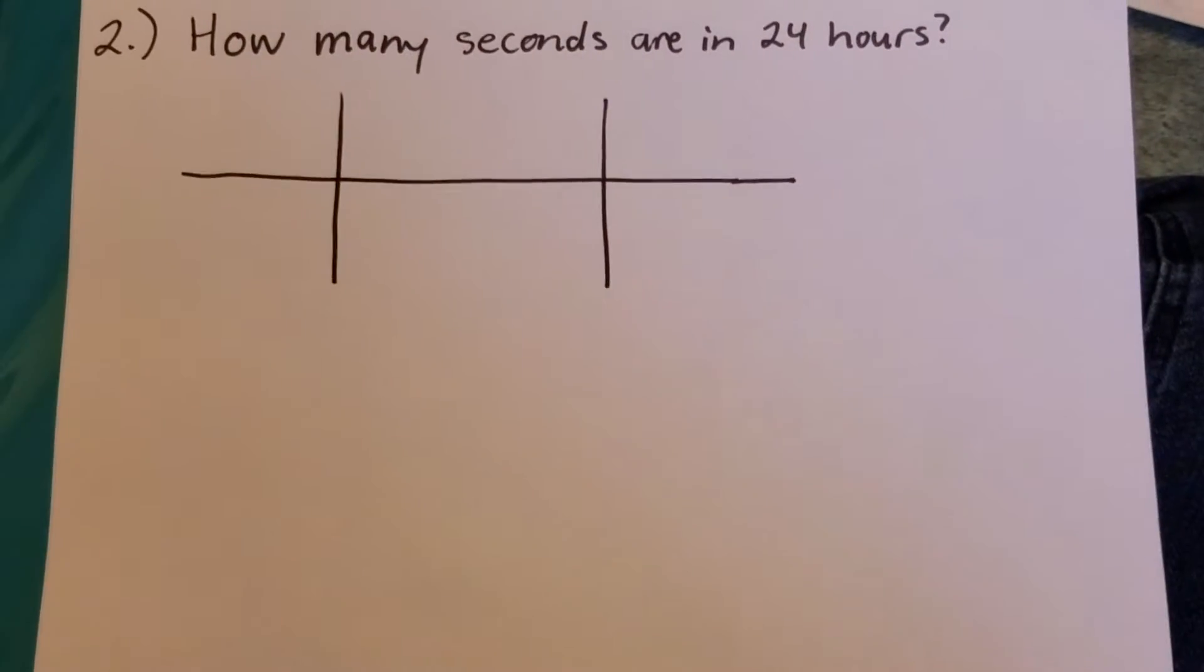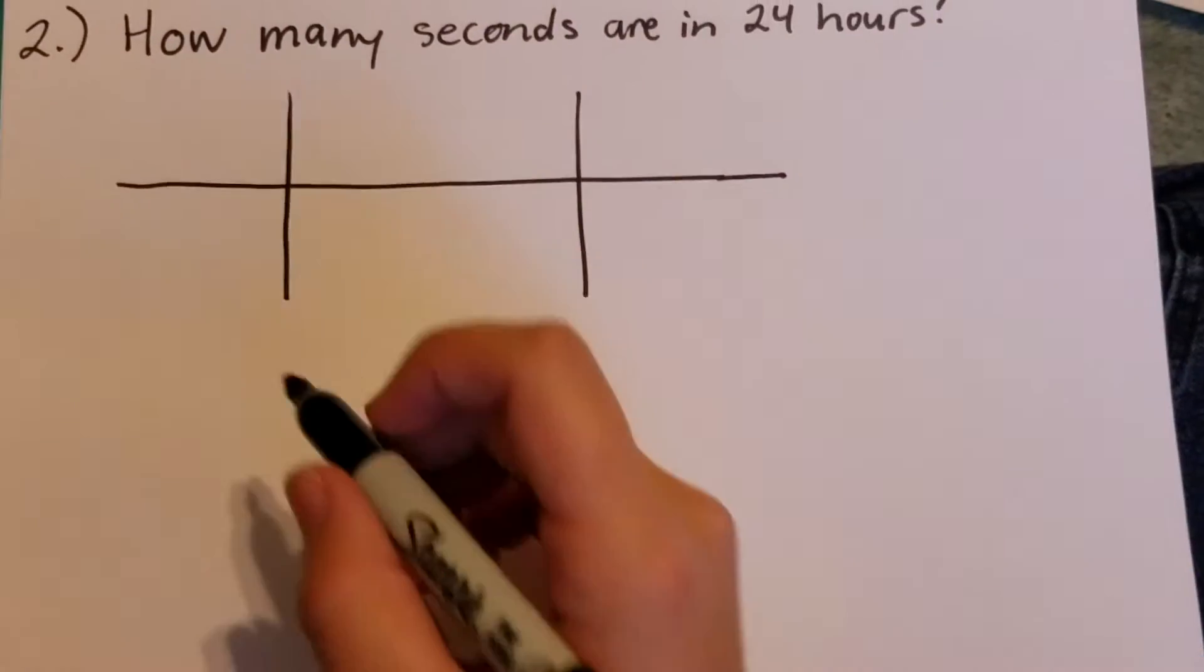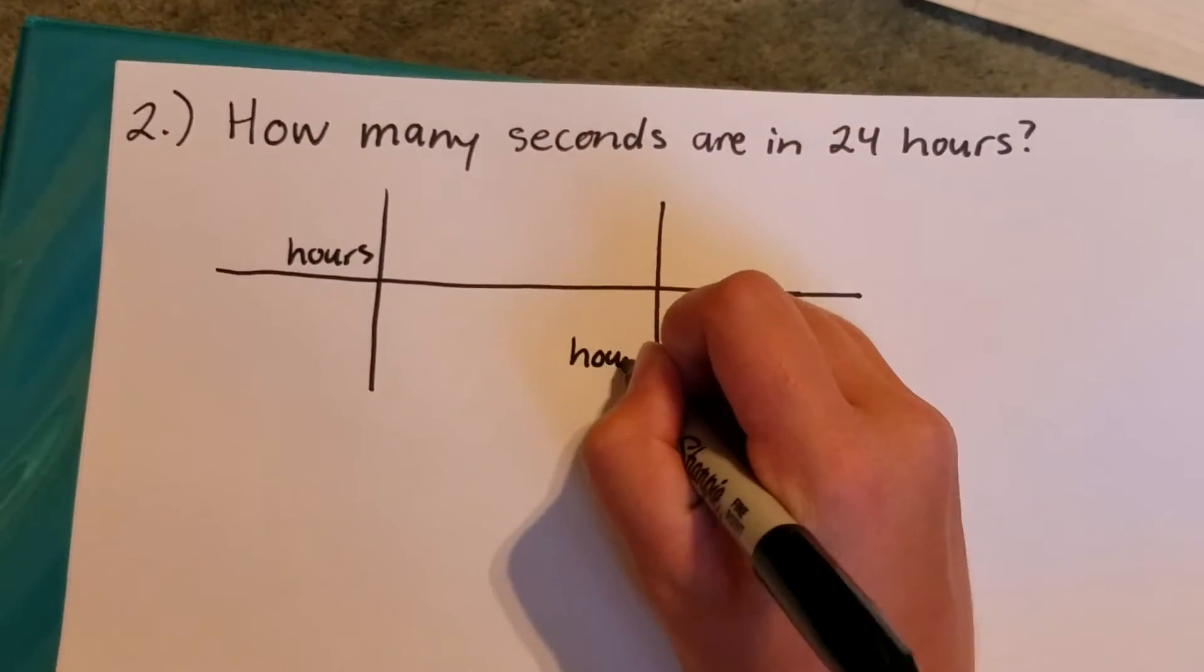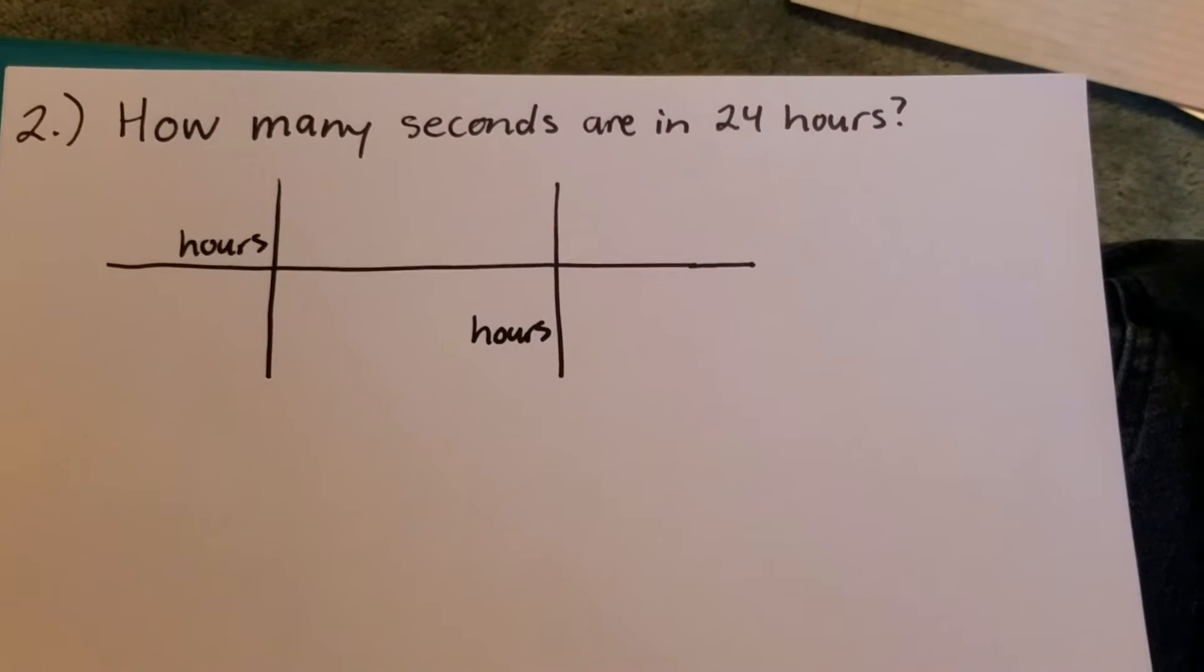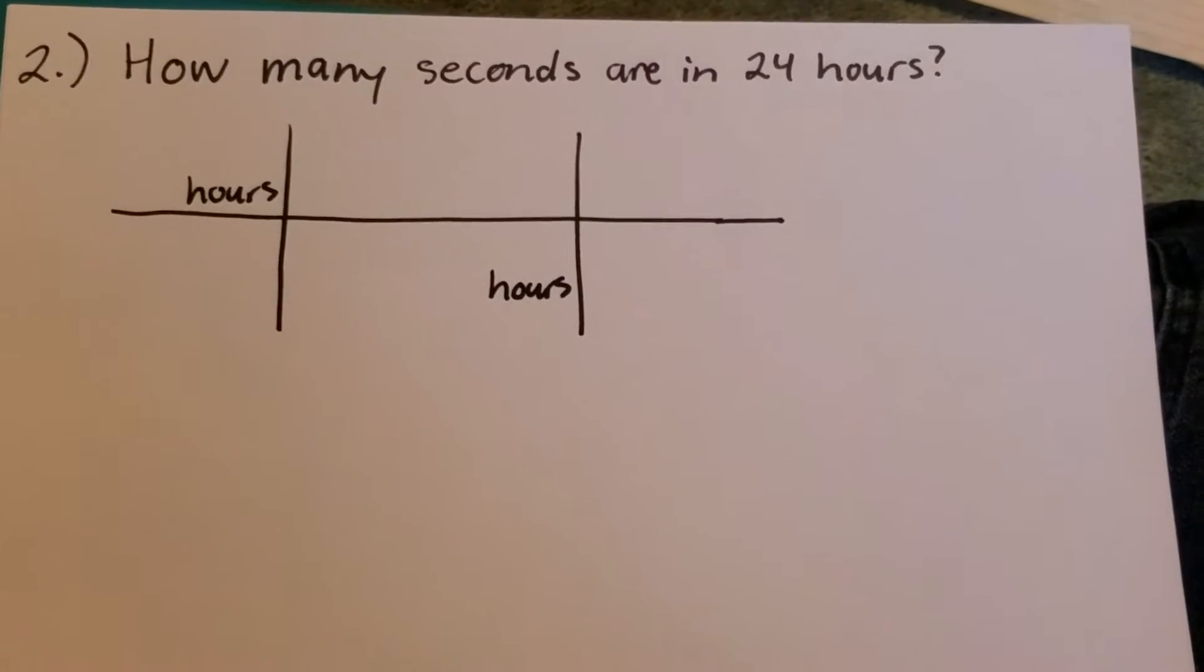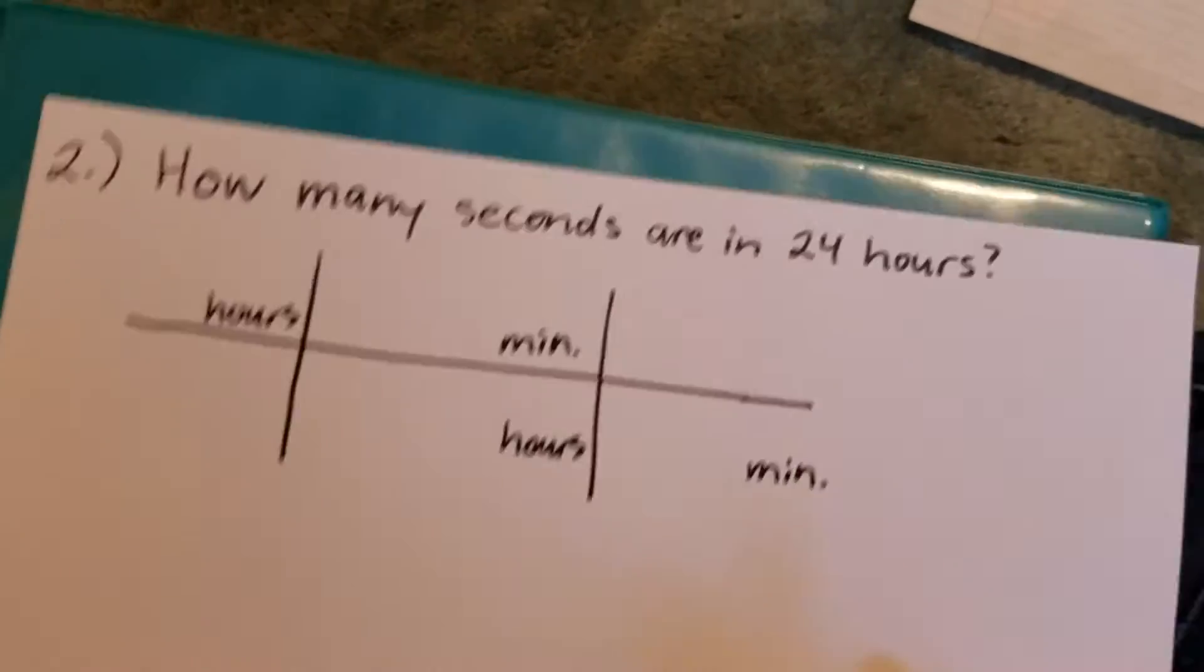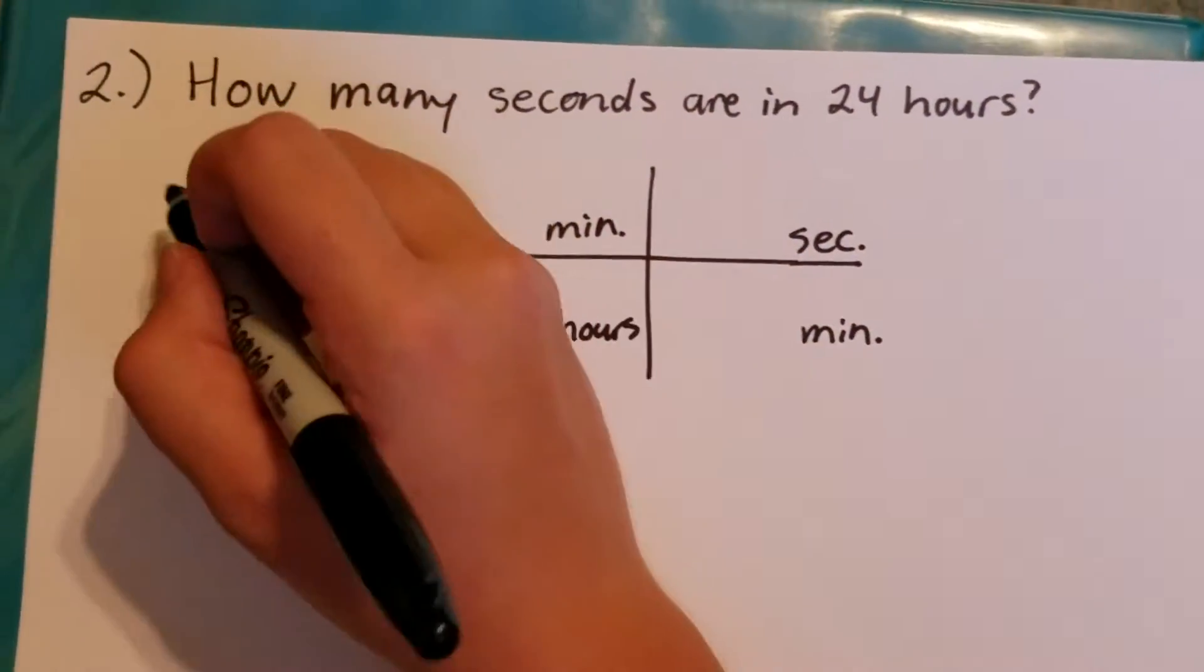The next question is how many seconds are in 24 hours? So I'm given the number of hours. So hours will go up here and down here so that they'll cancel. And now you can't go straight from seconds to hours so you'll have to go seconds to minutes to hours. So minutes go up here and down here so that the minutes will cancel. And then I'll be left with seconds. So then I'll put in the number that I'm given, 24.